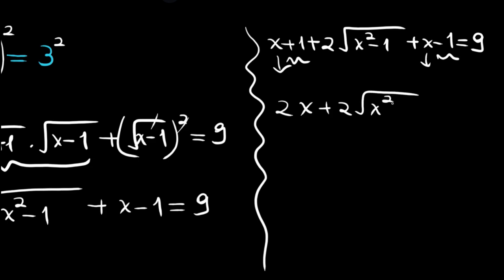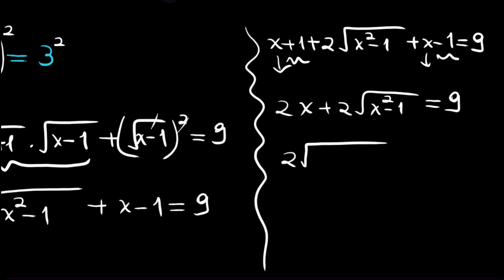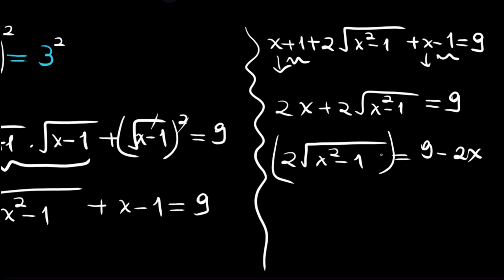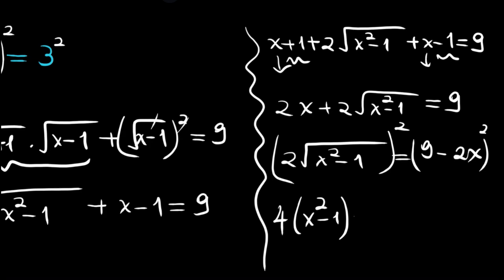The plus 1 and minus 1 cancel, and we have x and x, so: 2x plus 2 times square root of x squared minus 1 equals 9. We need one more squaring. First, isolate the radical: 2 times square root of x squared minus 1 equals 9 minus 2x. Squaring both sides gives: 4 times (x squared minus 1) equals 81 minus 36x plus 4x squared.